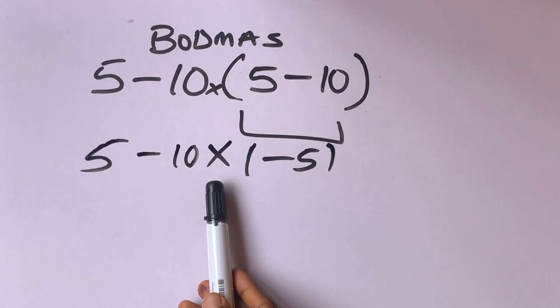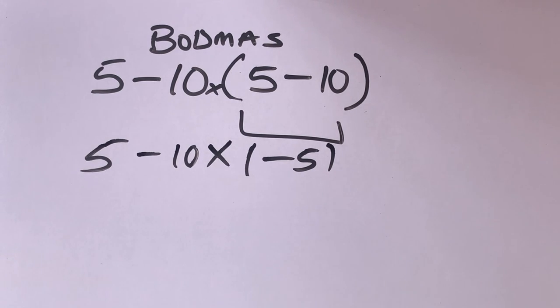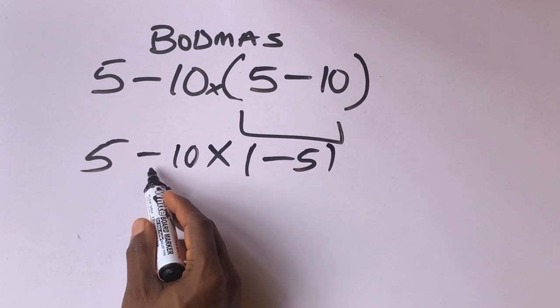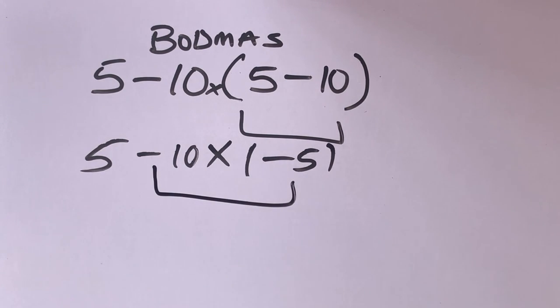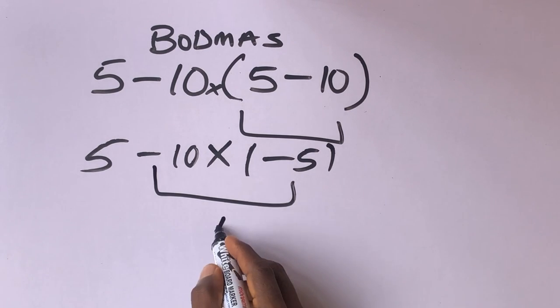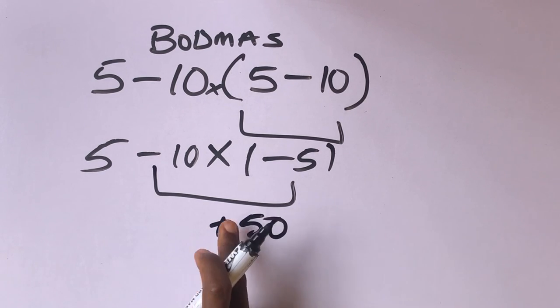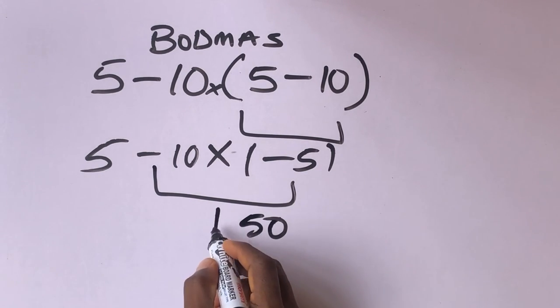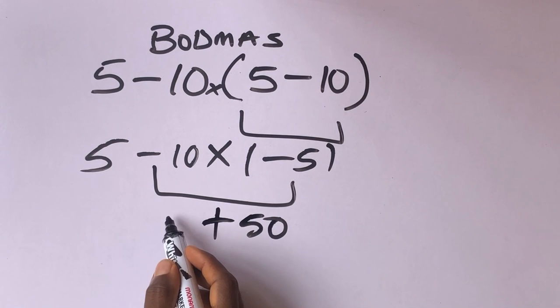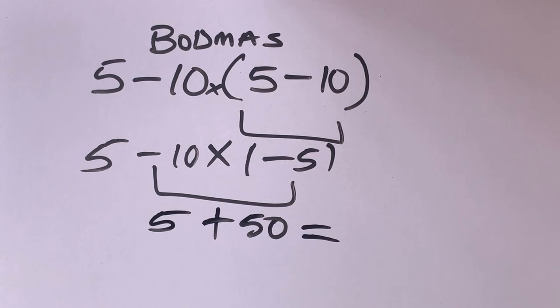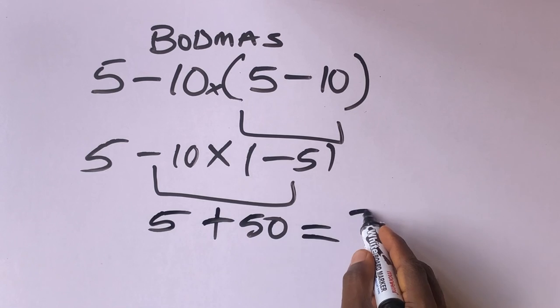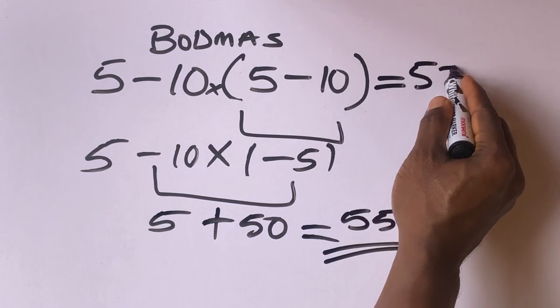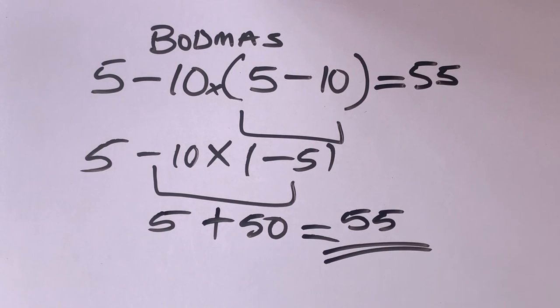Remember, multiplication comes before subtraction. So let's follow the order. Minus 10 times minus 5 will give us plus 50. Then plus this 5, 50 plus 5 will give us 55. So 55 is our final answer.